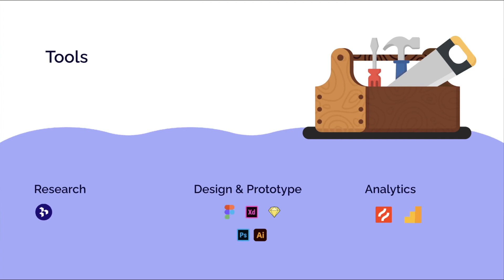UX designers use different tools depending on their current stage in the UX design process. For user research, some companies use Dovetail. For designing and prototyping, the most popular tools are Figma, Adobe XD, and Sketch, supported by Adobe Photoshop and Adobe Illustrator, which are also used for creating custom graphical UI elements, icons, and more. And finally, for doing analytics, the main software used is Hotjar and Google Analytics.